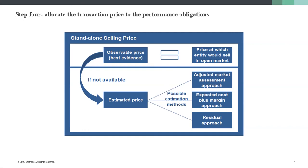The second estimation methodology is the easiest because it comes from internal processes: it's the expected cost plus margin. A company knows its expected cost and can determine its margin. However, be wary — you can't simply say you'll apply a 100% margin. It has to be a reasonable margin based on historical calculations. This is the most common approach, as companies can use a five-year look-back to estimate the expected cost plus margin.